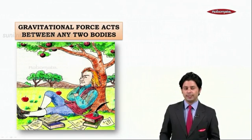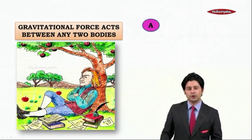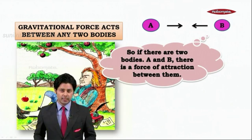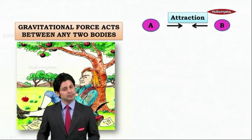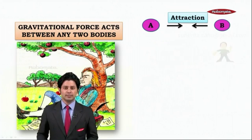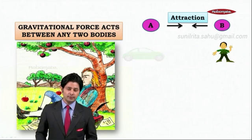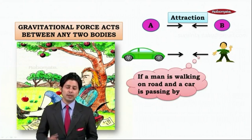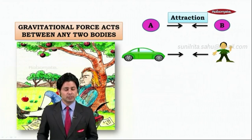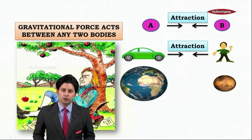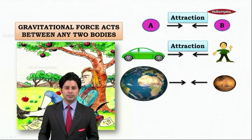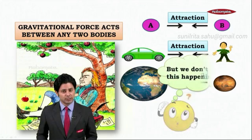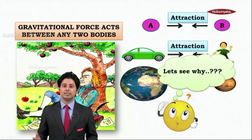Newton later thought that gravitational pull is not confined to an apple and the earth — in fact it influences the entire universe. Gravitational force acts between any two bodies. For example, if we take a man and a car, there is a force of attraction between them. Similarly, planets are attracted towards each other. But do we see a man being pulled towards a car? The answer is no — and we'll see why.